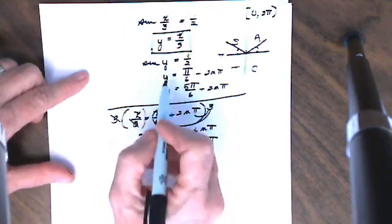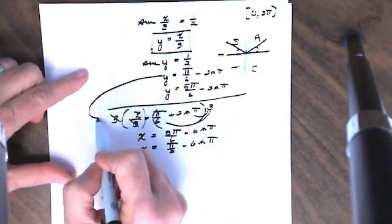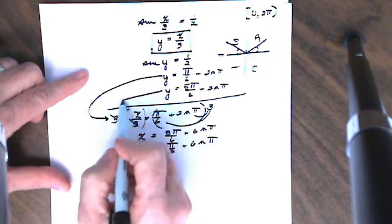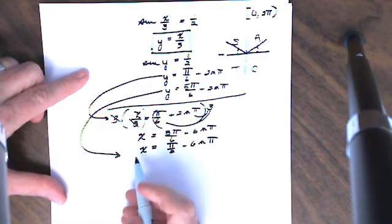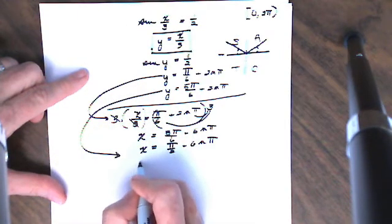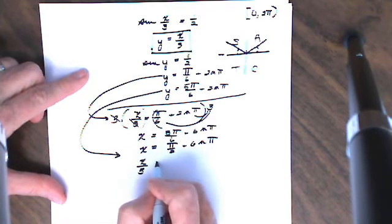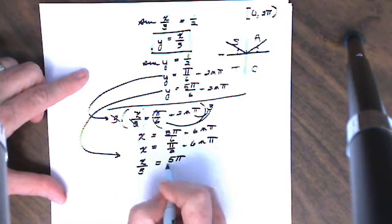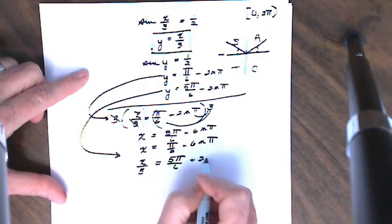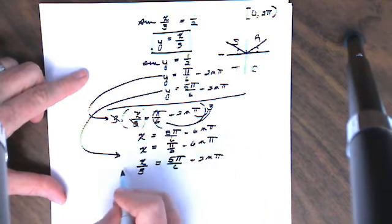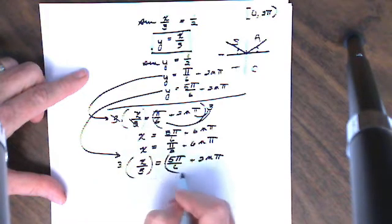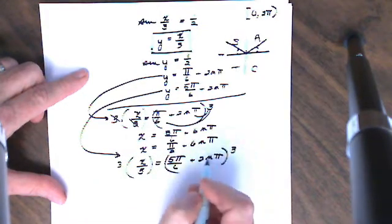That was for my first answer here, but I have a second answer. And now I'm going to work on the second answer. I'm going to replace y again with x over 3 is equal to 5π over 6 plus 2nπ. And again, I'm going to multiply both sides of my equation by 3.